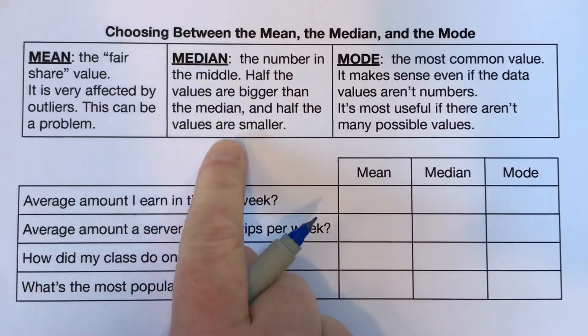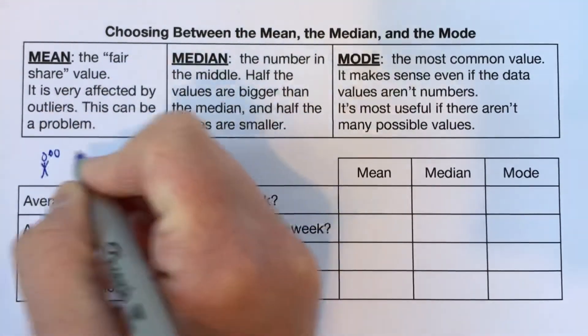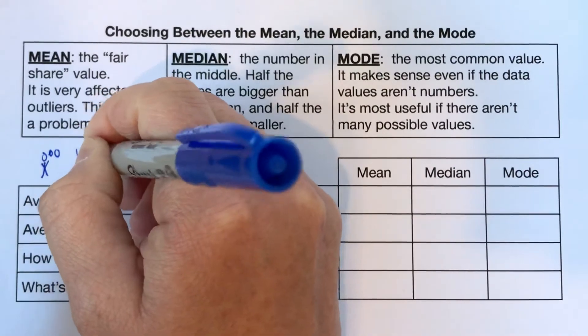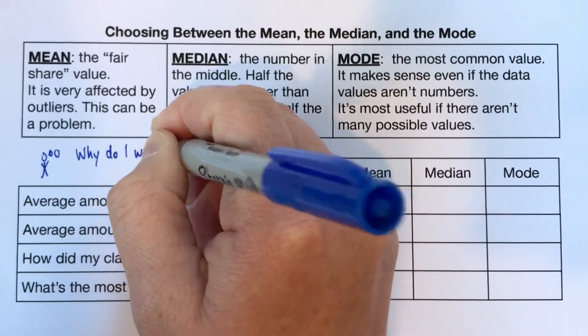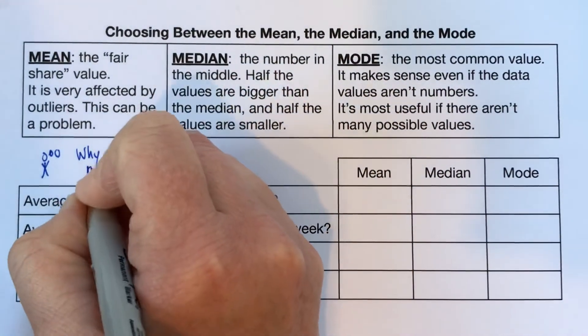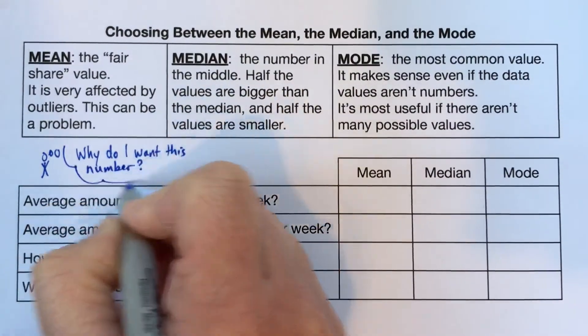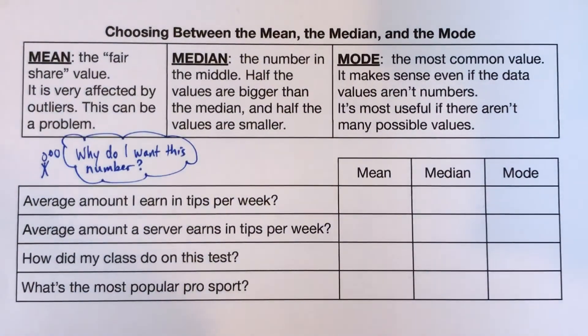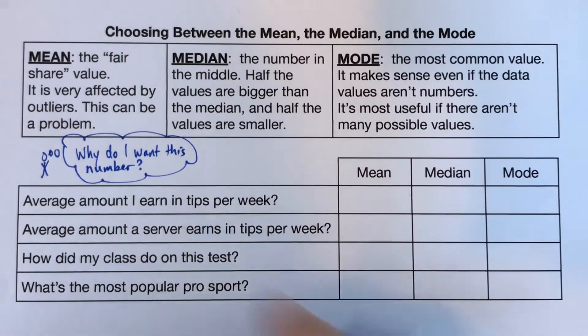And actually before we do this, another little thing I want to add, it's just a thing to think about, so I'm going to put it in a little thought bubble. Sometimes this affects what you're going to choose. If you have a particular thing you want to do with this number, why do I want this number? Or sometimes your motivation might affect which value you're choosing. For example, if you really want the number to be small, you might choose one or another.